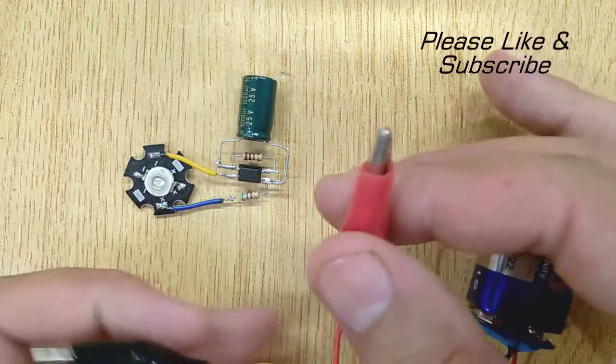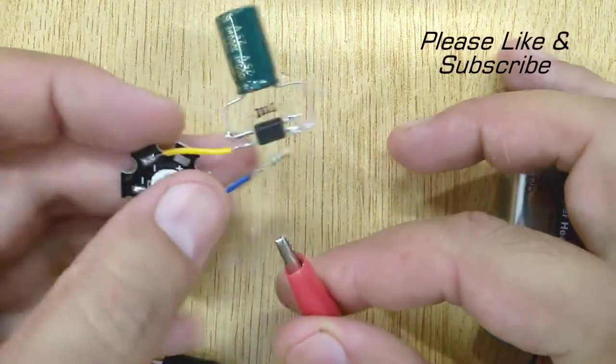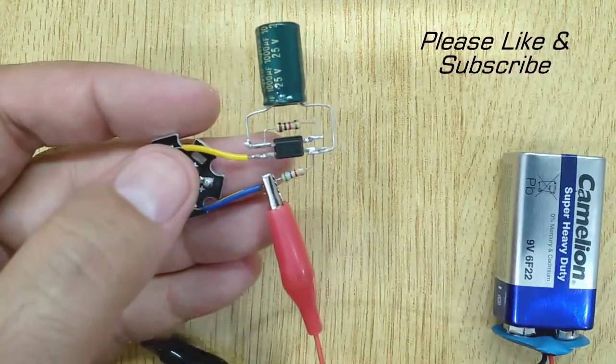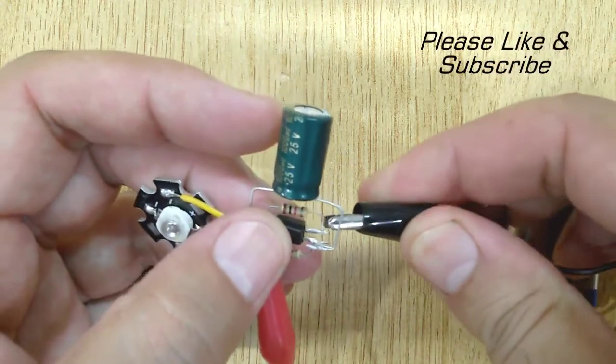Now connect the positive terminal of 9 volt battery with the positive pin of LED. And the negative pin of 9 volt battery with the second pin of PC817.